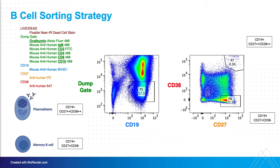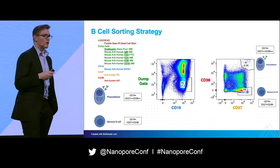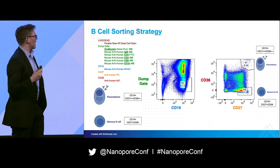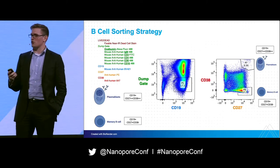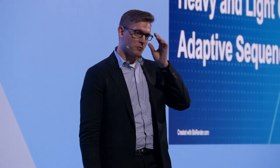At P8 we expect to see memory B-cells, and at P7 we expect to see the plasmablasts. Plasmablasts make up a very small proportion but fly off the top right corner of the plot. We took blood at multiple time points to find that peak moment of plasmablast proliferation to get the number of cells we're hoping to see. Then we used 10X sequencing to do the transcriptomics.